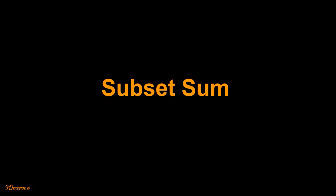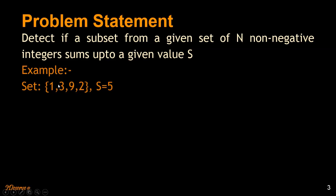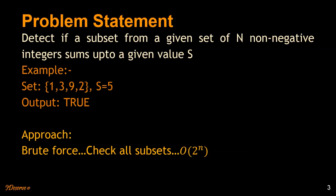Hi everyone, this is Virendra from iDeserve. Today I'm going to talk about the subset sum problem. The problem statement is: detecting if a subset from a given set of n non-negative integers sums up to a given value S. For example, if we have a set like {1, 3, 9, 2}, we want to find out a subset which sums up to 5. The output will be true because it contains the subset {3, 2} which sums up to 5.